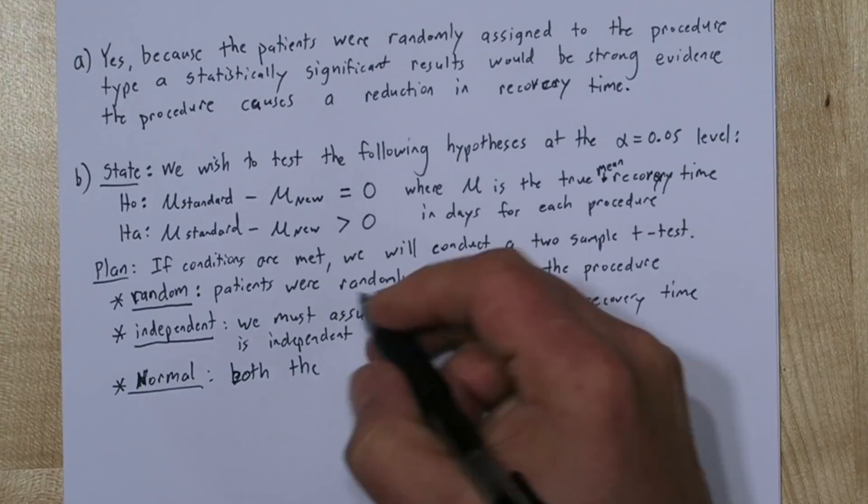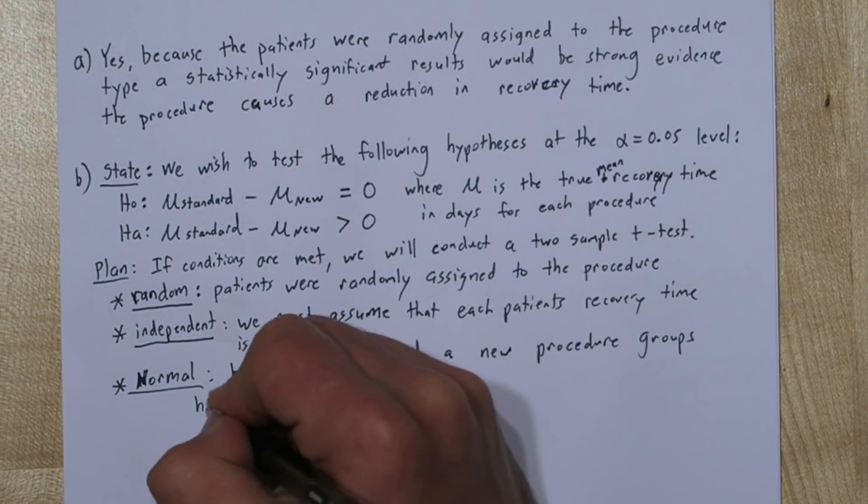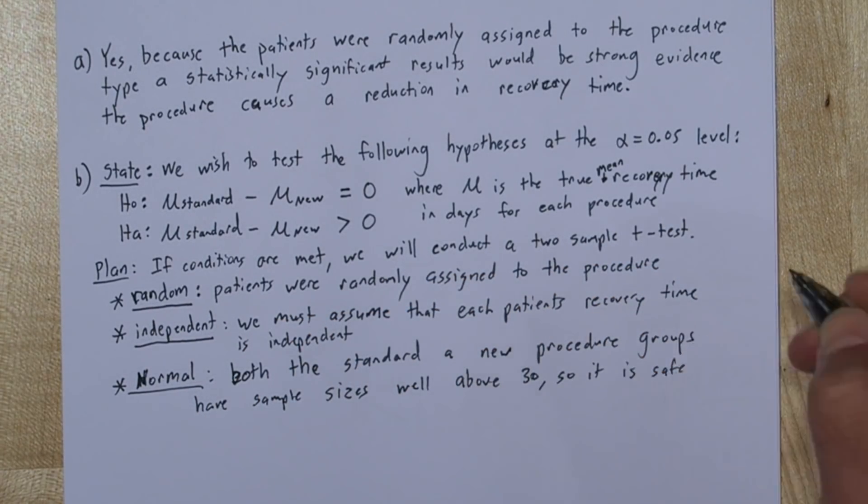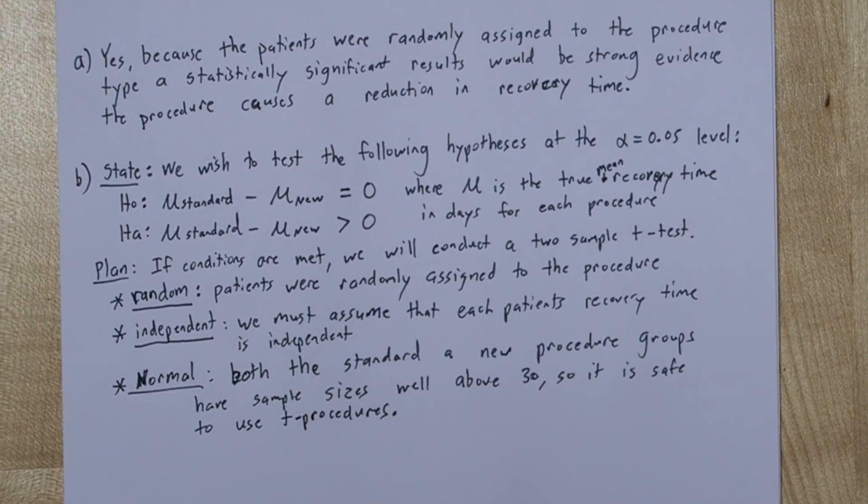The next one is essential, the normal condition. Now both the standard and the new procedure groups have sample sizes well above 30, so it's safe to use t procedures. And we're using t here because we have the sample standard deviation, not the population standard deviations for recovery times for these procedures.